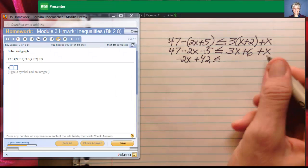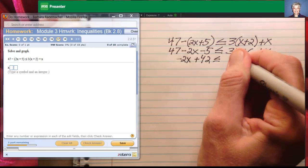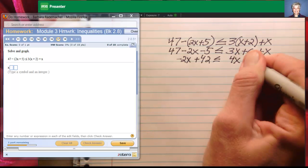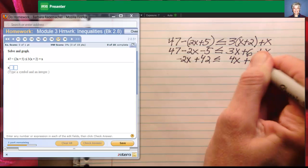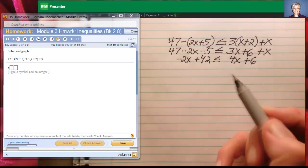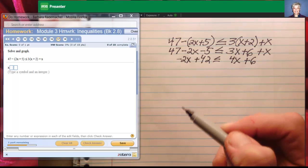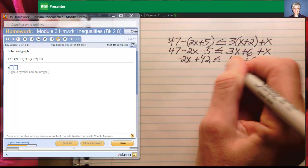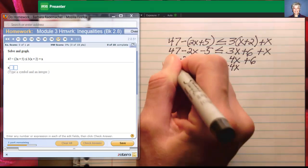Over here, 3x plus x is 4x. So I'll have 4x plus 6. Now remember I said you always put your variable terms on the left when you're dealing with an inequality. So I'll subtract 4x from both sides.